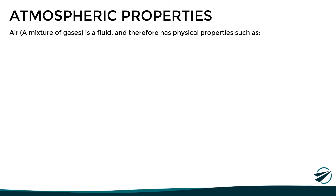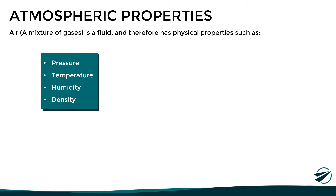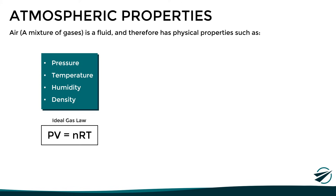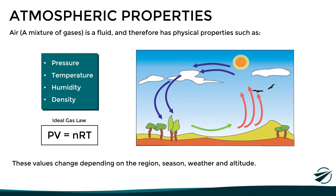Let's move on to the atmospheric properties. Air, being a mixture of gases, is a fluid, and therefore has physical properties such as pressure, temperature, humidity, and density, among others. These are directly related through the ideal gas law, which implies that a change in one of these variables will necessarily affect the others. We must also take into account that the values of these variables change depending on the region, season, weather, and altitude.